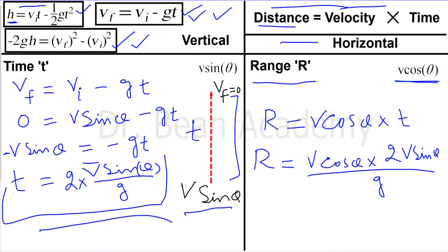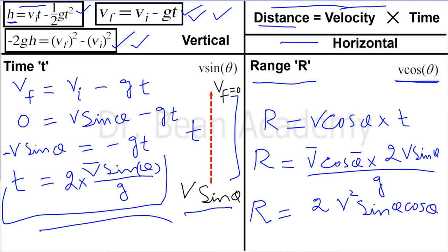So if you are asked to find the total horizontal distance or range of a projectile, you can find it if you know the velocity and the angle theta with the horizontal axis. Combining similar variables, the range equation becomes: R = 2v² sin(theta) cos(theta) / g.